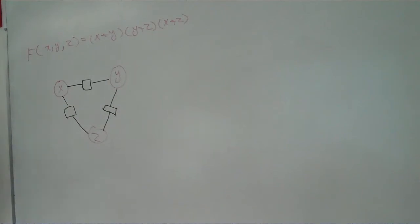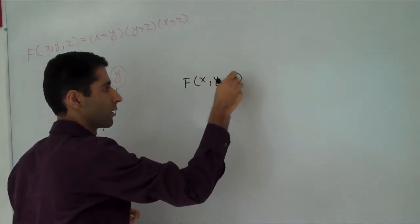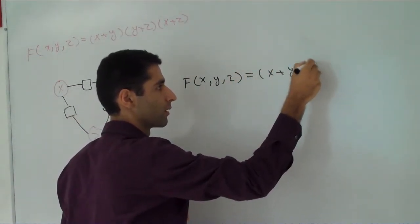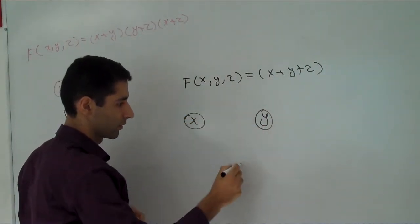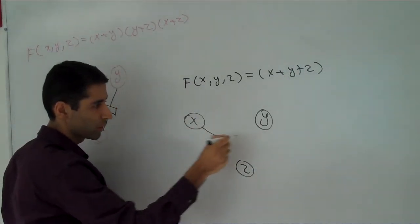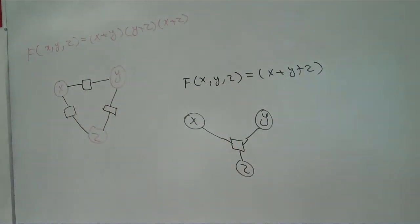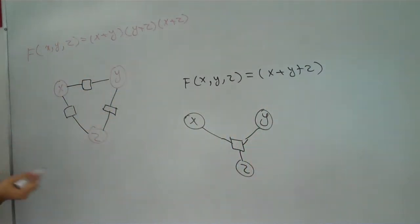And for second example, we have F. It's the three factor graph here. It's the last one. It's a function, for example, if we can...